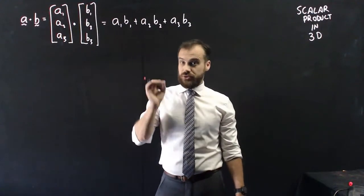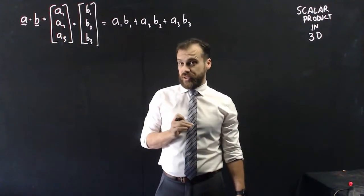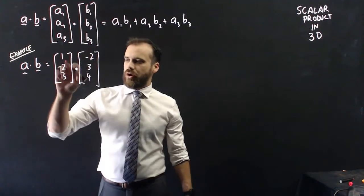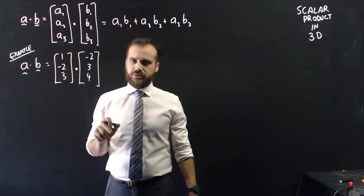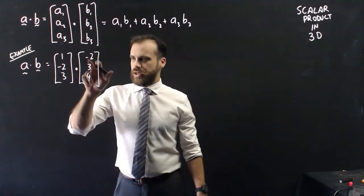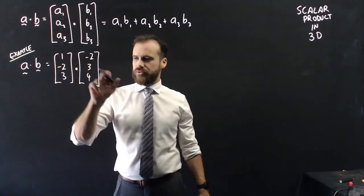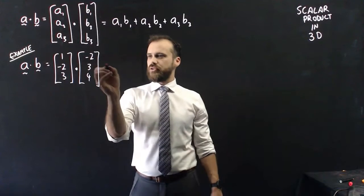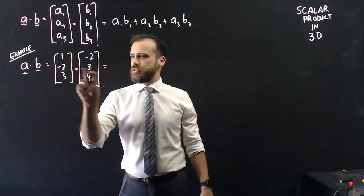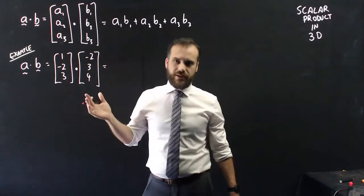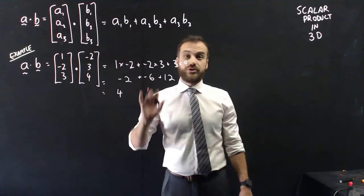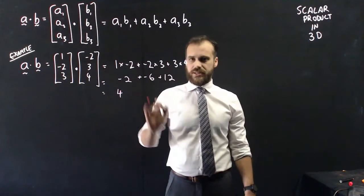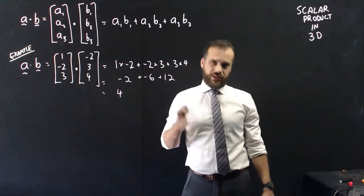So if I had two specific vectors, A dot B where A is I minus 2J plus 3K and B is negative 2I plus 3J plus 4K, I can find the dot product by multiplying corresponding components and adding them together. You can see I get a dot product of four. The scalar product spits out a scalar — a number.